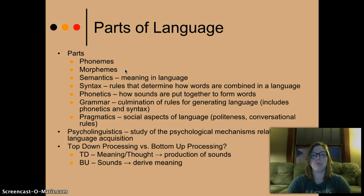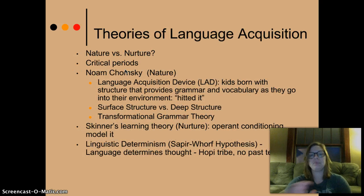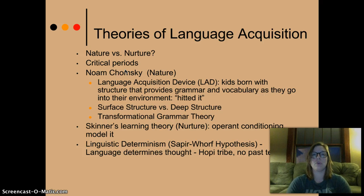Top-down processing versus bottom-up processing: top-down is taking meaning and thought to create the production of sounds, and bottom-up is taking the sounds to derive the meaning. We're going to get into this in class. Theories of language acquisition — how do we acquire language? Is it something we're born with, or is it something that's nurtured? There are a lot of critical periods and stages of development for children that we'll focus on in class.